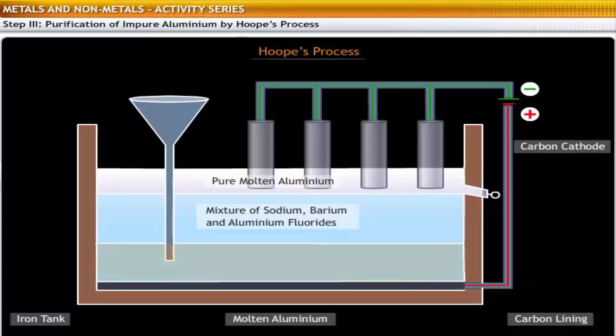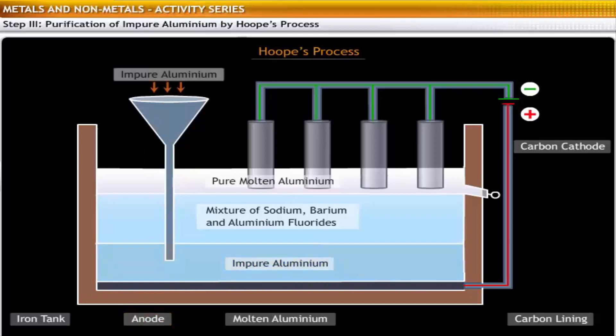Along with the carbon lining, the bottom layer acts as the anode for the electrolytic cell. The bottom layer contains impure molten aluminium obtained from Hall and Herold's process.